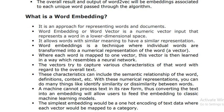Word embedding is the approach of representing words and documents. The word embedding or word vector is the numeric vector input that represents a word in a lower-dimensional space. It allows words with similar meaning to have similar representation. Word embedding is a technique where individual words are transformed into a numerical representation called a vector, where each word is mapped to one vector, and this vector is then learned in a way that resembles a neural network.